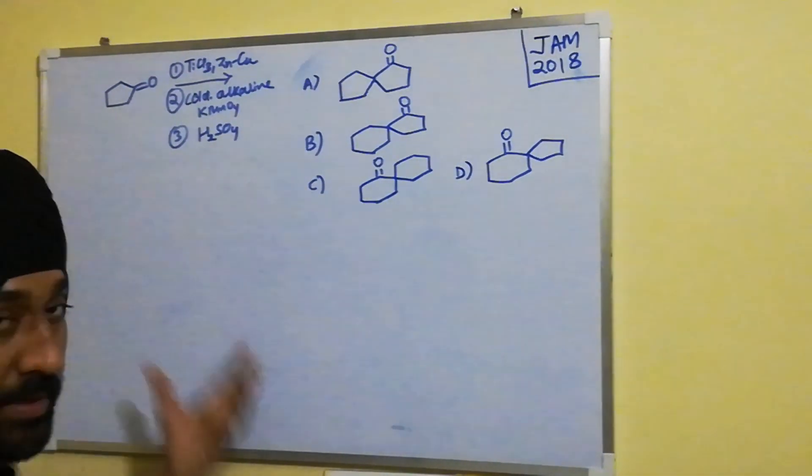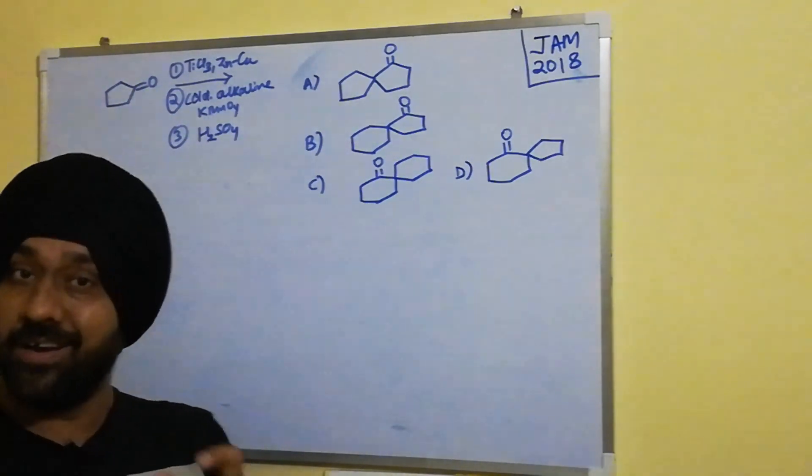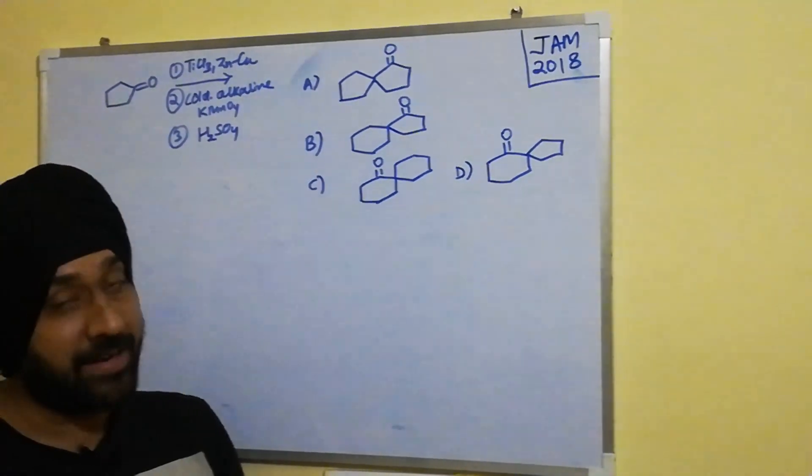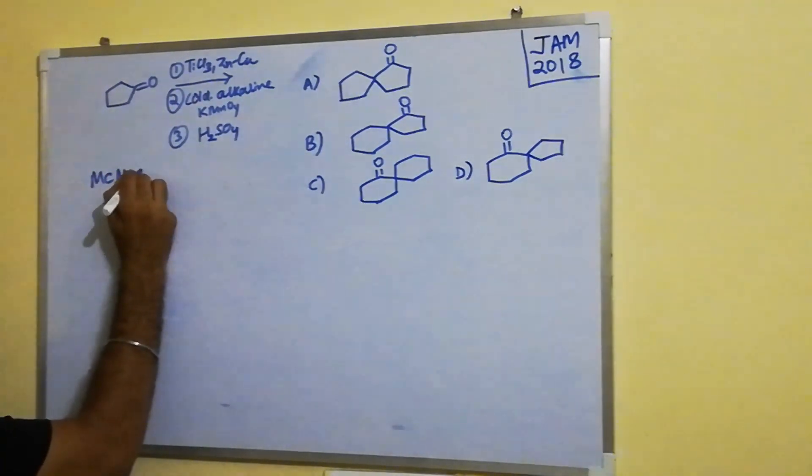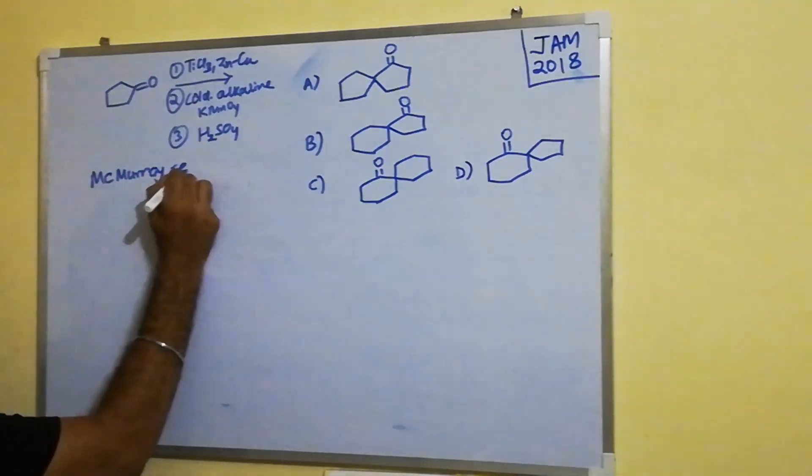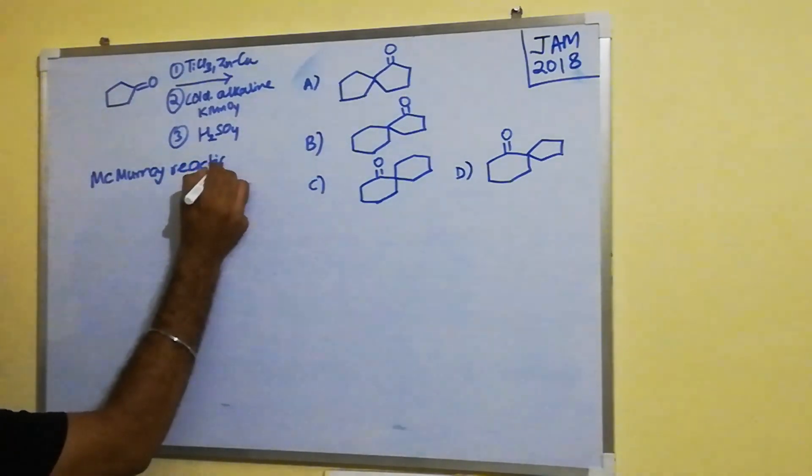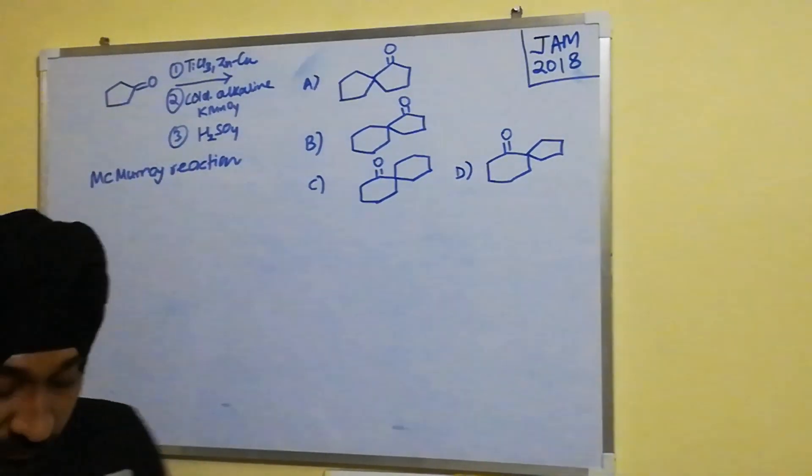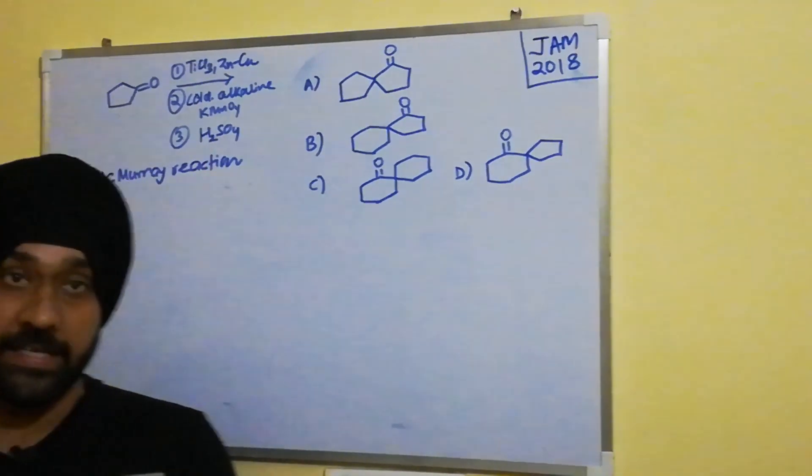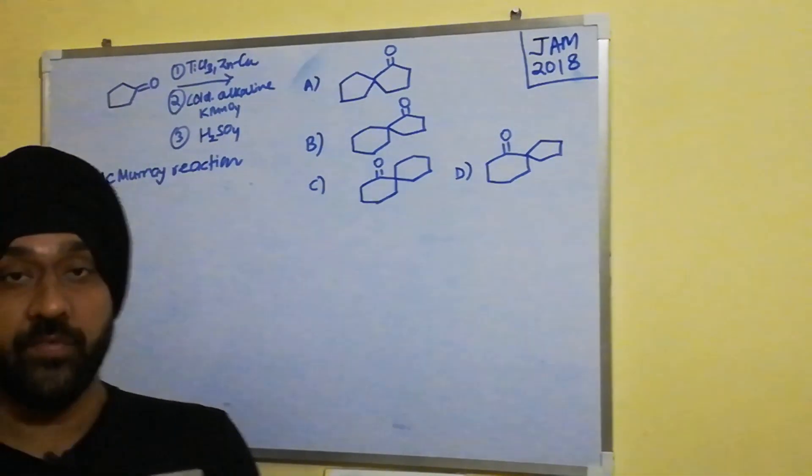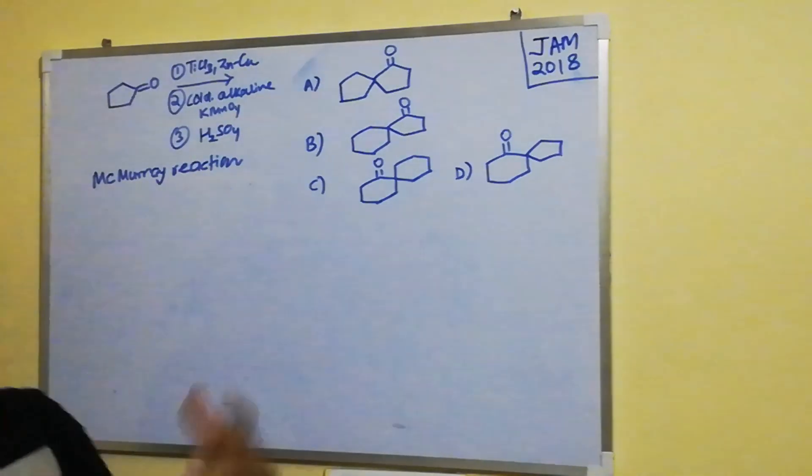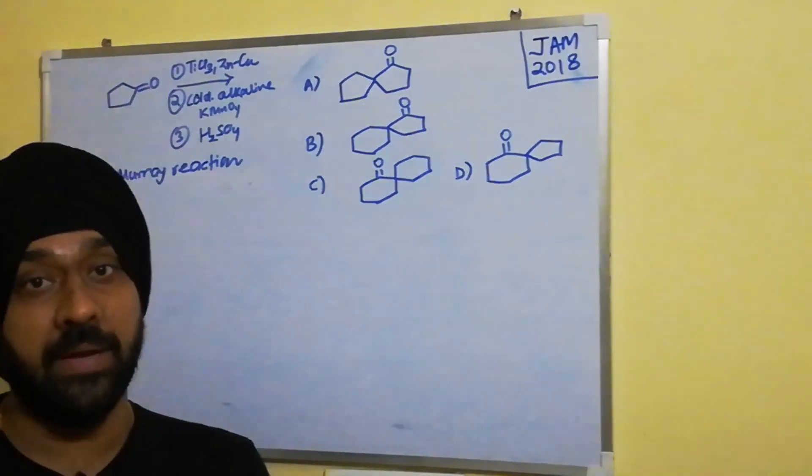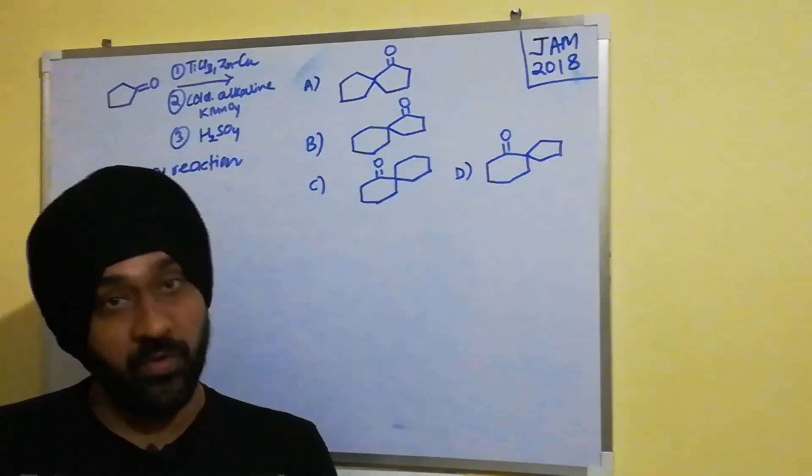The first step of this reaction is a name reaction called McMurray coupling or McMurray reaction. In this particular reaction, whenever we have ketones or aldehydes treated with TiCl4 or TiCl3 in presence of zinc copper alloy or reducing agents like lithium aluminum hydride, it leads to the formation of alkene.